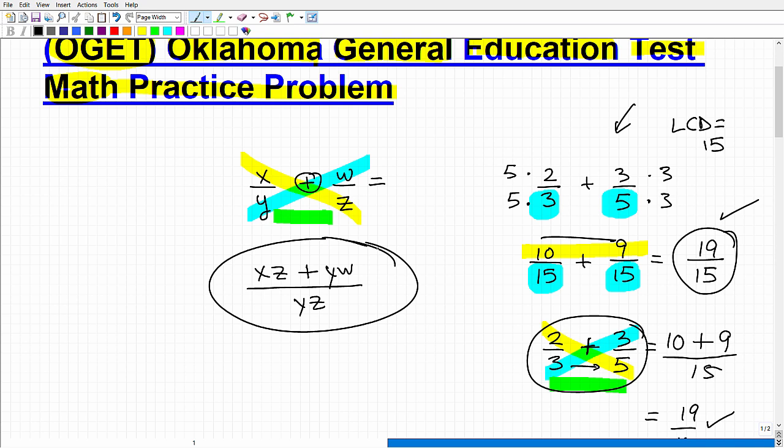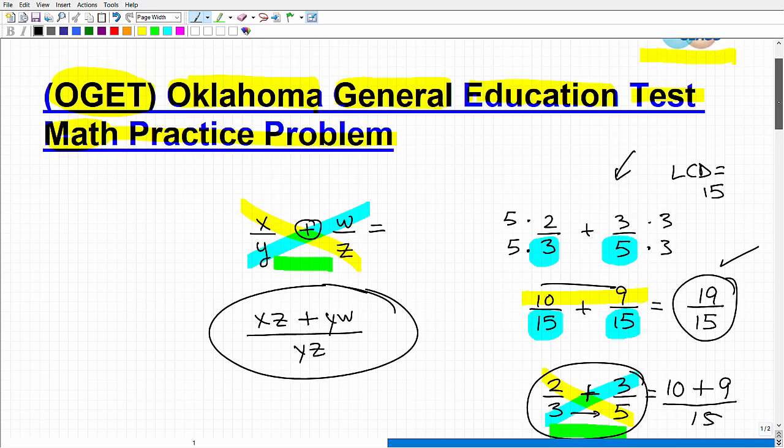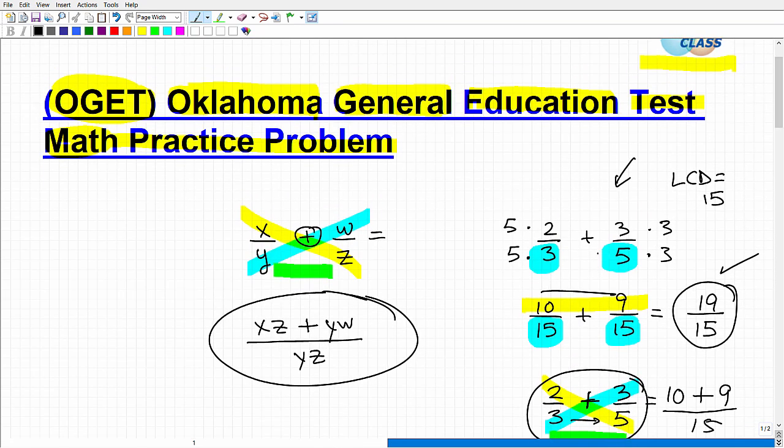This is a critical skill. Fractions are everywhere and you're going to see them for sure on the OGET. But not just fractions with numbers, you're going to see fractions with variables. They're technically called rational expressions, but you don't really need to remember that. But you have to be able to remember: in algebra, when you see variables, variables are representations of numbers.